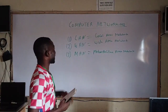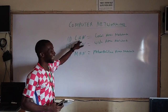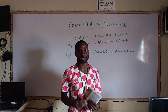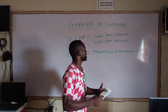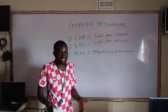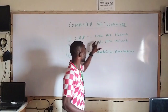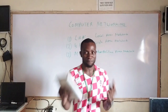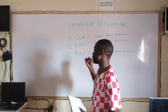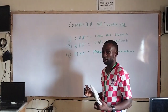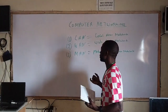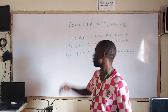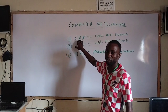This type of network called LAN is used to network, for instance, a school in the same location. This one doesn't go far. You use it to network a building — for instance, a church, a hospital, a school, or a private building. You can use this type of networking for those.